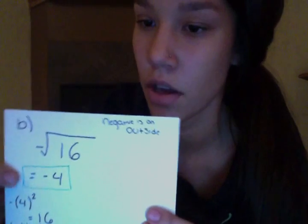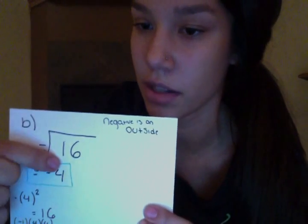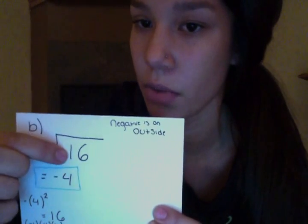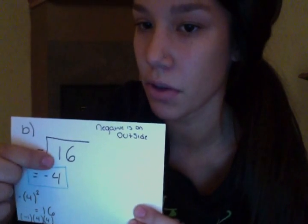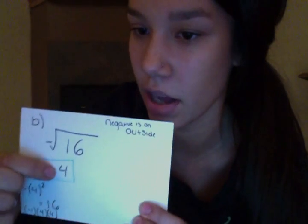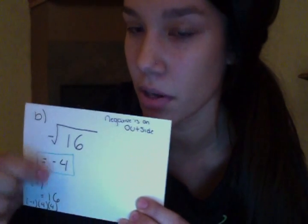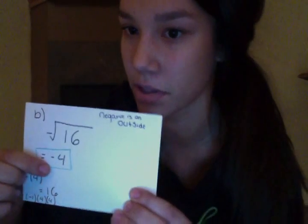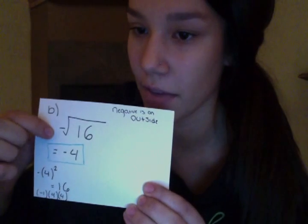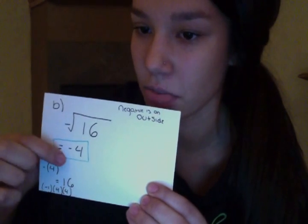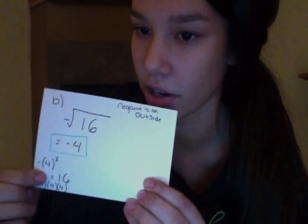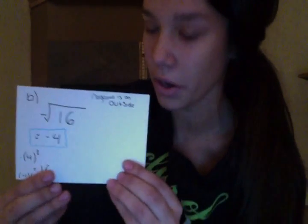The second one is the negative square root of 16. We have to figure out what times itself equals 16, and that would be 4 because 4 times 4 equals 16. Then you have the negative on the outside, so you have to make sure to include that in your answer, giving you negative 4.